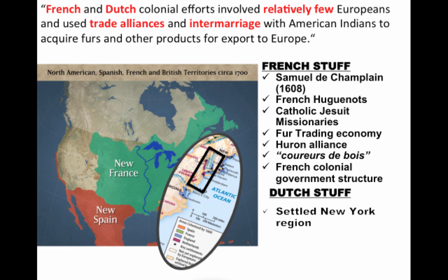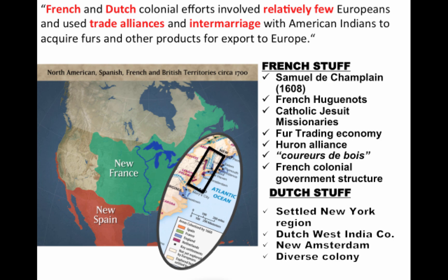The Dutch established colonies in what is today New York and Albany, run by the Dutch West India Company — it was a company town. New Amsterdam was the name. It was a very diverse colony; the majority of people in New Netherlands were not even Dutch. As a result, it was difficult for Holland to keep its colony when England swooped in around 1664. The Beaver Wars also took place between the Dutch and their French rivals.